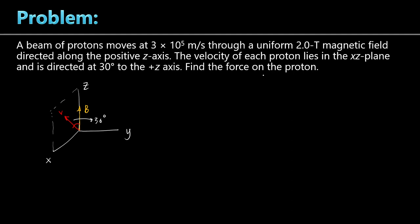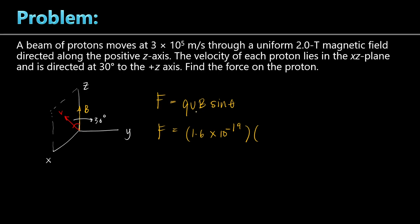What is the force felt by the proton? The magnetic force experienced by a charged particle moving in a magnetic field is given by F equals QVB sine of theta. This is the magnitude of the force. We substitute the charge of the proton — which is the same as the charge of an electron, 1.6 times 10 to the negative 19 coulombs — times the velocity, 3 times 10 to the 5 meters per second, times the magnetic field, 2 Tesla.